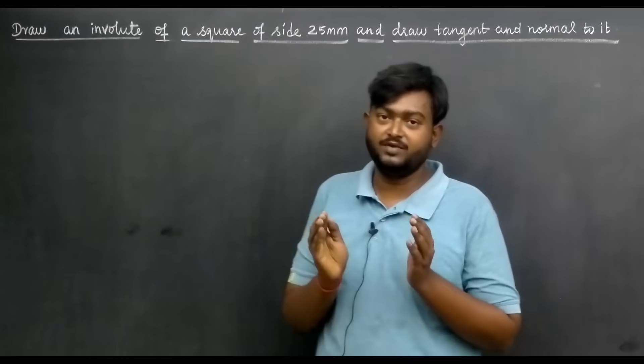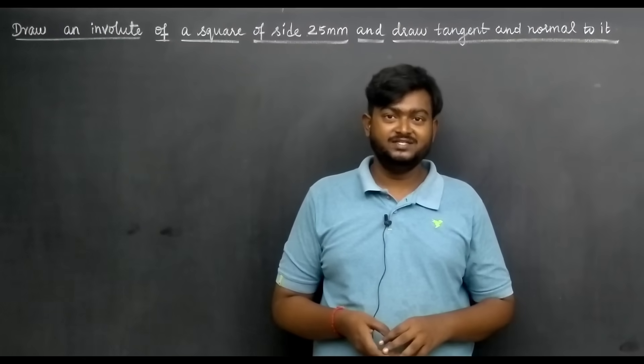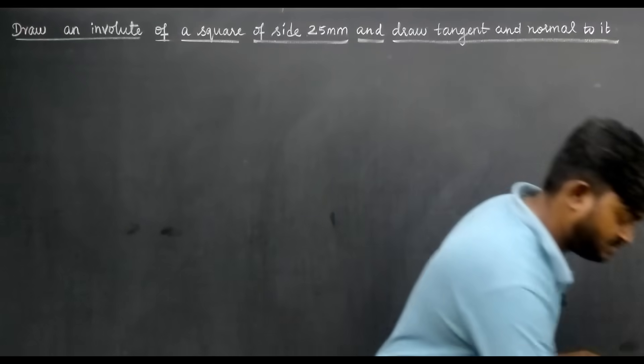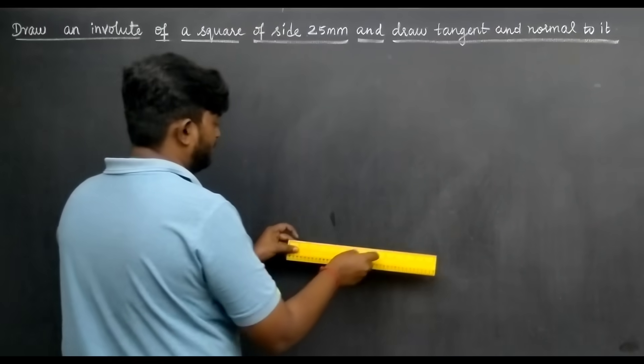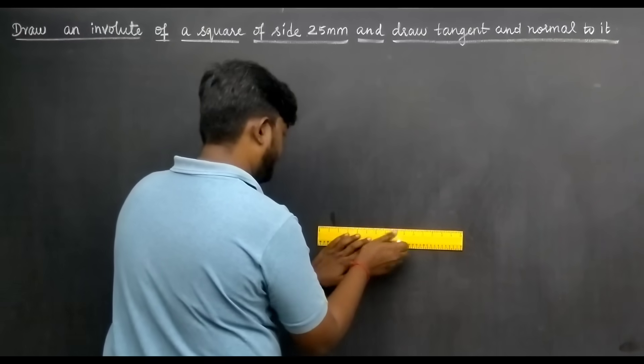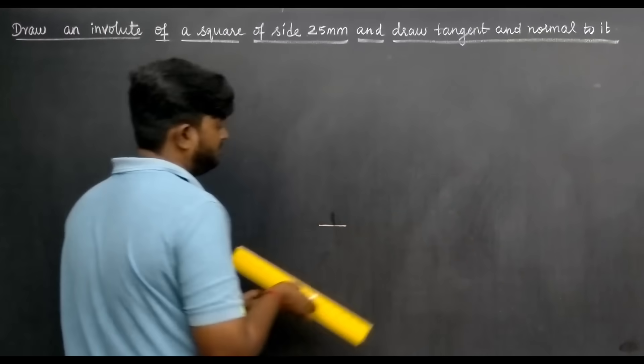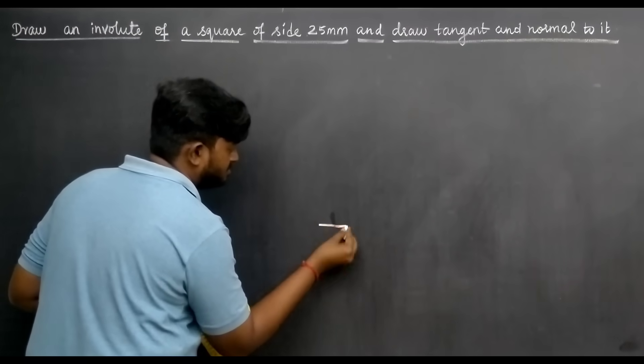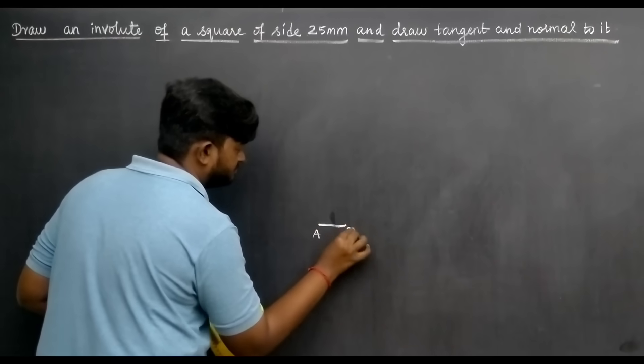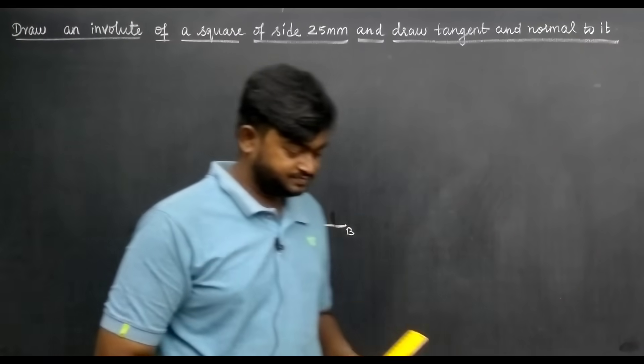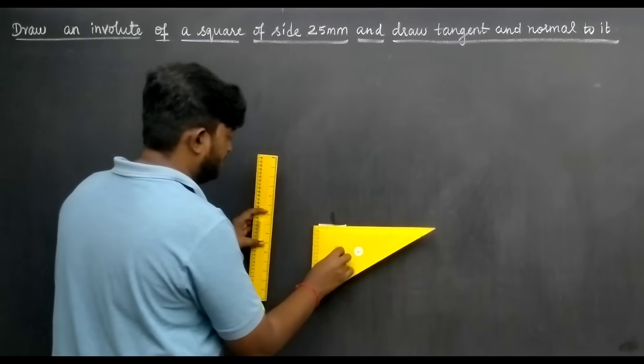So first, we draw the square. The square side is 25mm or 2.5 centimeter. Using the scale, we take 2.5 centimeter and draw one line. So 2.5, one line. This is point A and B.